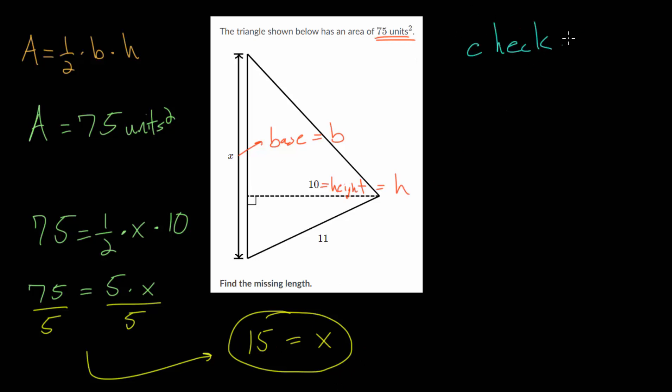To check it, we'll just plug everything back into our area formula. We have the area is 1/2 the base, which we just found out is 15, multiplied by the height, which is 10. 15 times 10 is 150. So we need half of 150. If you cut 150 into 2, each piece would be 75 long. So our area is 75 square units.